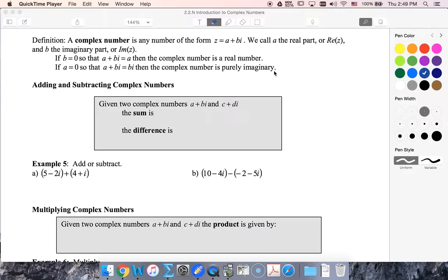When I add and subtract complex numbers, it's just like collecting like terms. So I'm gonna take the real components and sum those, and then I'll sum the imaginary components. So the difference would be a minus c plus b minus d times i.